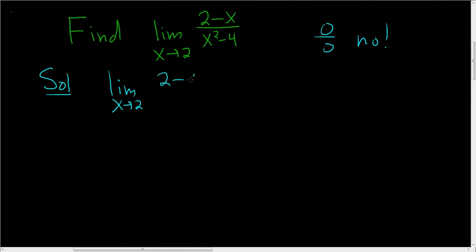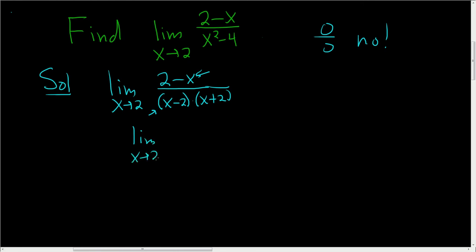So this is 2 minus x, and in the denominator, you can see that this will factor — it's the difference of squares. So it's x minus 2 times x plus 2. Now, we can't quite cancel just yet. Here we have x minus 2, and here we have 2 minus x. So the trick is to factor out a negative 1 in the numerator. If we put a negative 1 here, then we can write this as x minus 2.